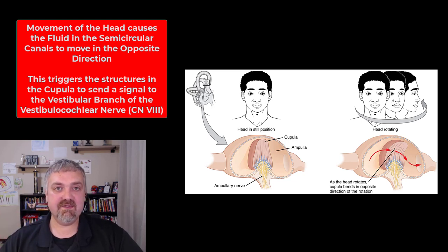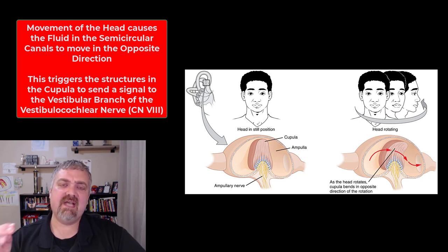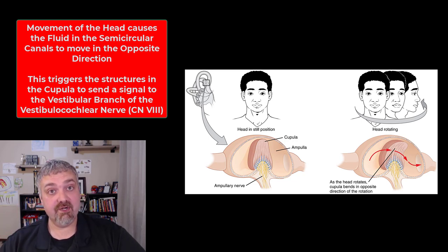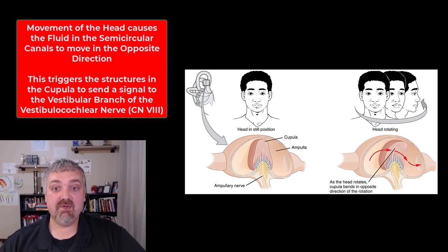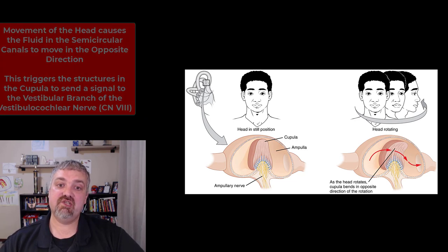The information these hair cells send to the brain tells it about head position. That information is sent through the vestibular ganglia to the vestibular branch of the vestibulocochlear nerve, which is cranial nerve 8, and then it synapses with the vestibular nuclei in the brain. This is how your brain receives information about rotation of the head in any possible direction.